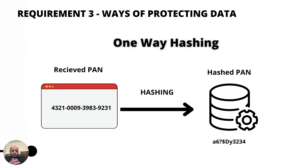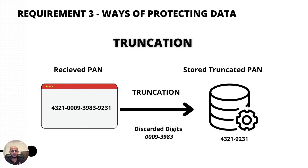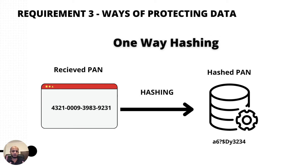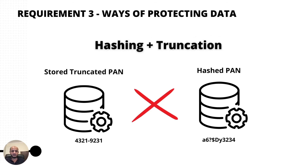Sometimes, when there's no need for masking or truncation and you don't need to retrieve the data, you can store it as a hash. That's one valid option. Just to recap: truncation is used when storing — you discard the digits; hashing is an irreversible cryptographic conversion — those are the key differences.